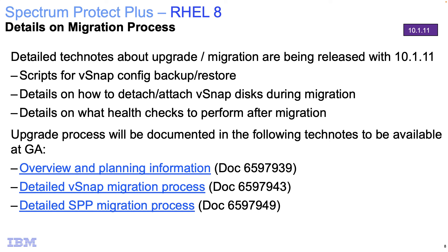There are some detailed tech notes about the upgrade and migration that are available for you. You can see the titles of them here — this overview and planning information, a detailed tech note on the vSnap migration, and a detailed tech note on the Spectrum Protect Plus migration. Before you begin this process, I would recommend that you read these tech notes in detail. They're going to give you all of the various different cases, different hardware supports, and different configurations depending on how your environment is laid out — including disk migration, VADP migration, and security considerations.